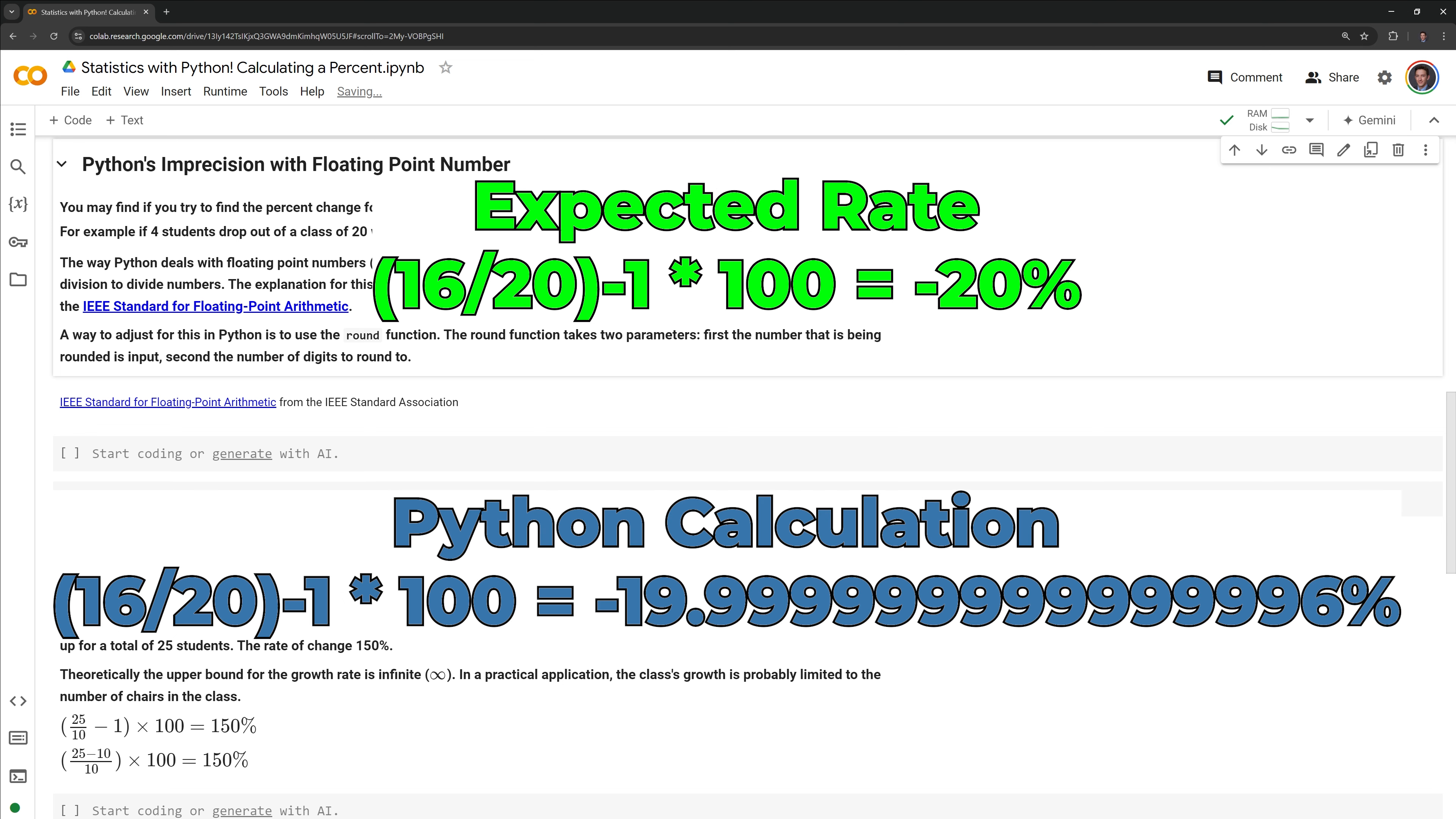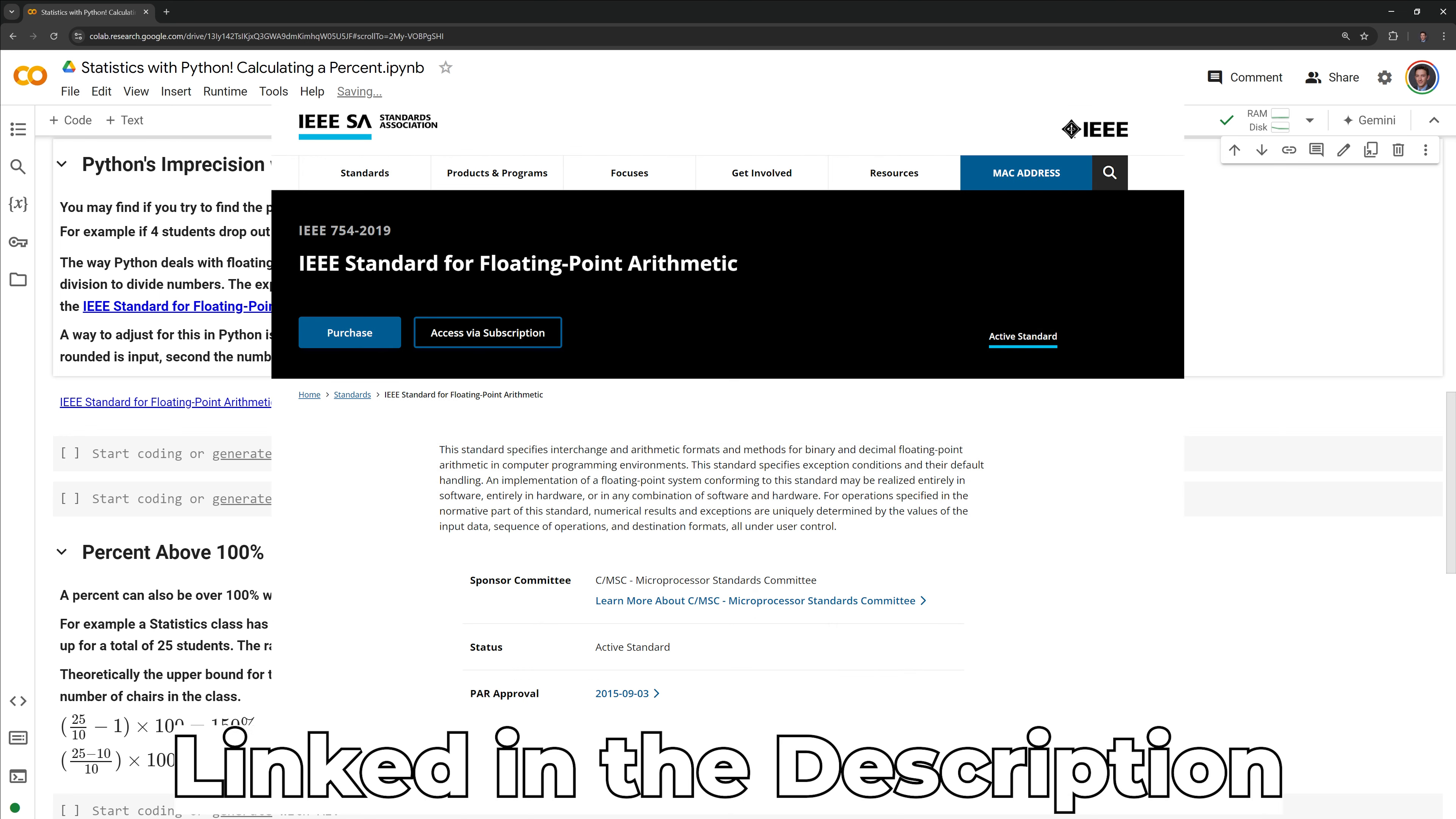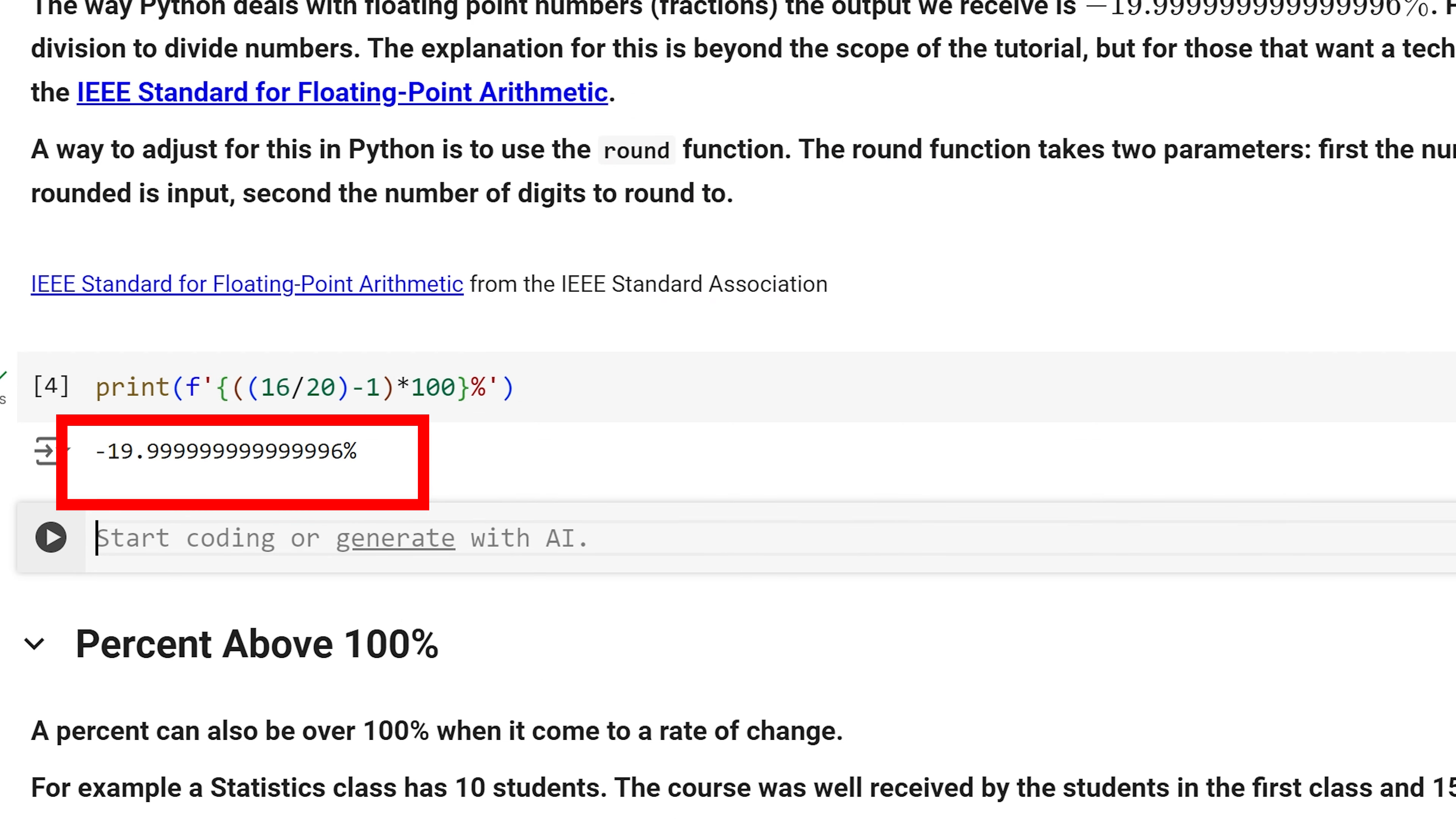The way Python deals with floating point numbers, which can also include fractions, the output we receive is negative 19.9 repeating. Python uses binary division to divide numbers. The explanation for this is beyond the scope of this tutorial, but for those that want a technical explanation, I link the IEEE standard for floating point arithmetic. Let us run the calculation in Python. Python calculated the rate at negative 19.9 percent repeating.